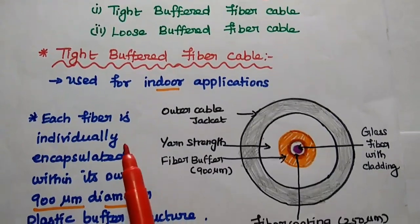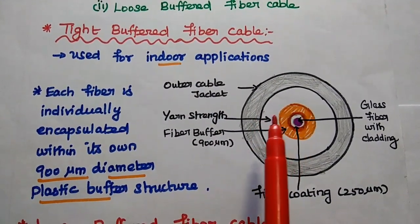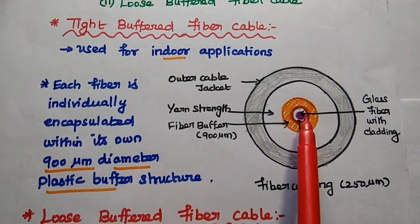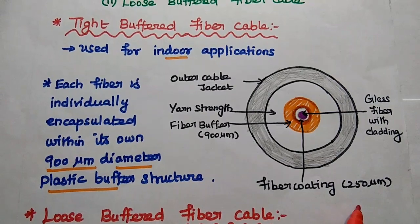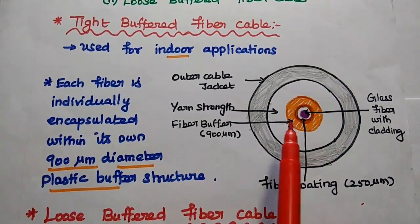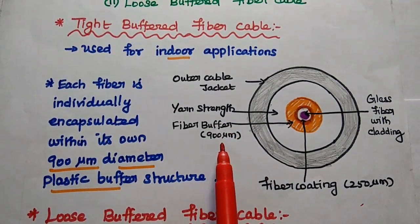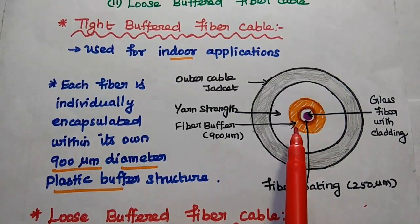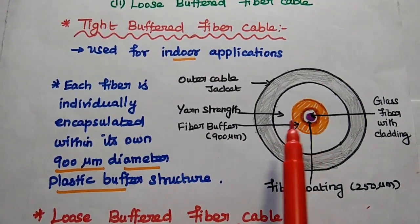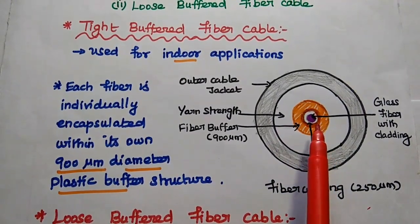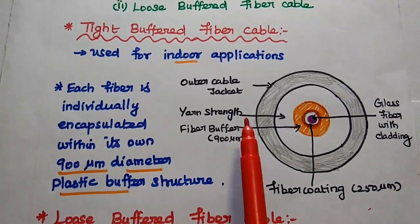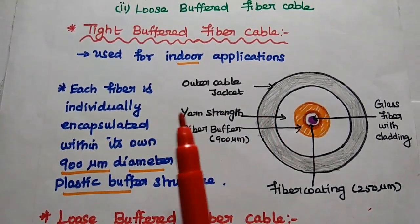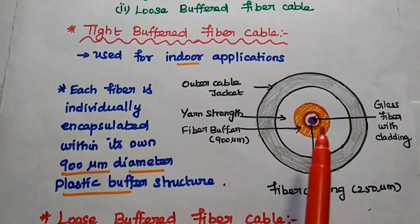In this tight buffered fiber cable, there are several layers of protective shield. Here we have the glass fiber at the center of the cable, then fiber coating with 250 micrometer diameter, then fiber buffer with 900 micrometer diameter range. Each fiber is individually encapsulated within its own 900 micrometer diameter plastic buffer, which provides more strength to the fiber.